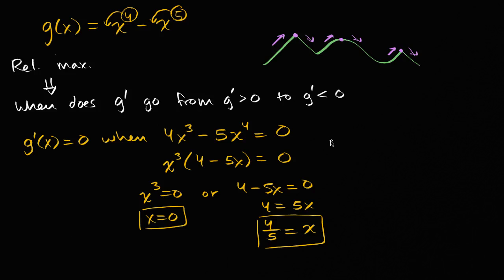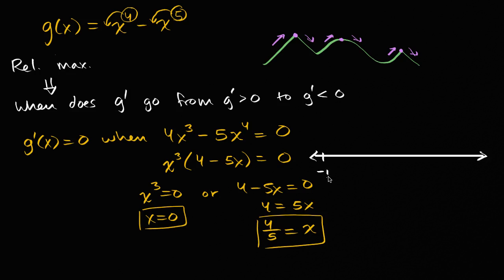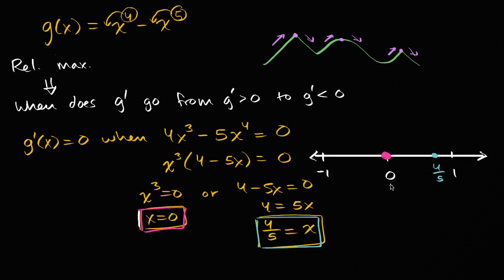Let's think about what g prime is doing on either side of these critical values. I'll draw a number line to help visualize. We care about zero and four fifths. So we have one critical point at x equals zero and another at x equals four fifths. These critical points are the only places where g prime might switch sign. Let's think about the interval from negative infinity to zero.